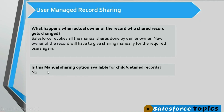Please note that in a master-detail relationship, detail records do not have any manual sharing option. Only at the parent-level record can a user perform manual sharing, and once the parent record is manually shared, the same access automatically applies to the child detail records.